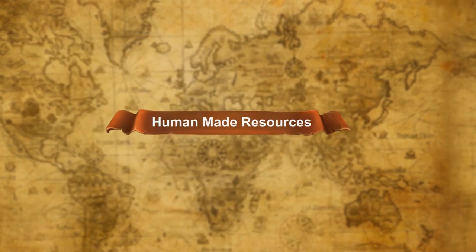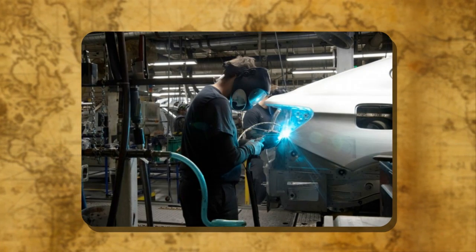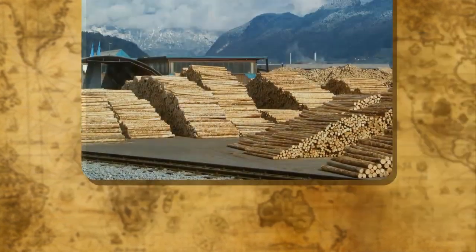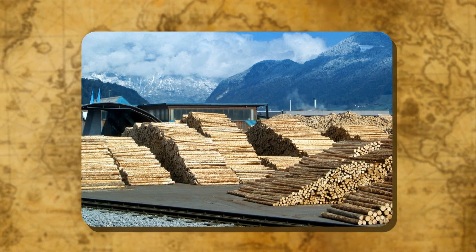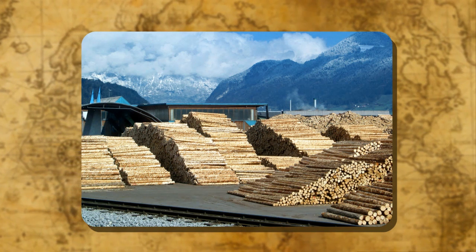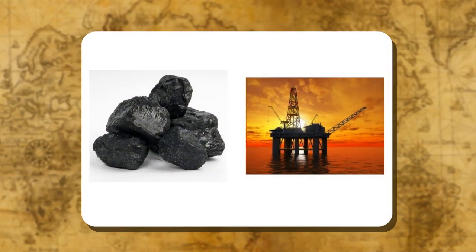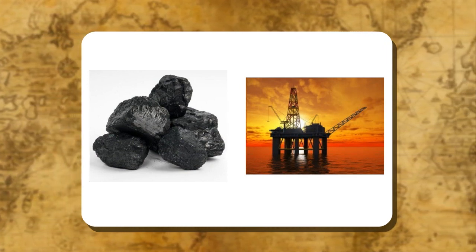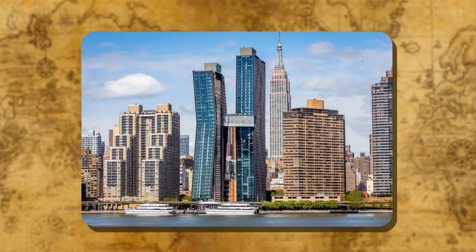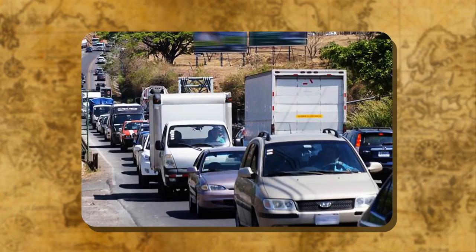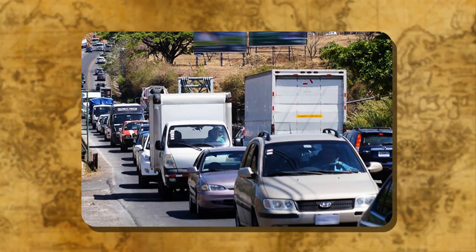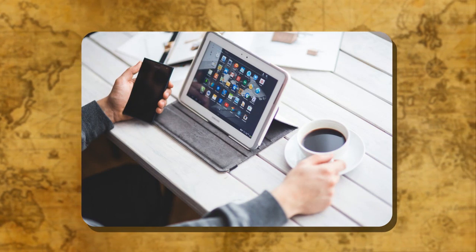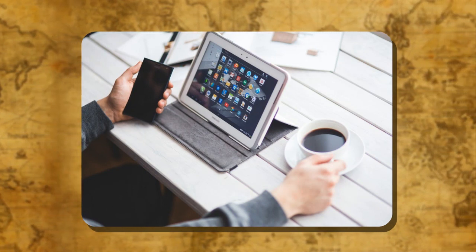Human-made resources are those resources which are developed by human beings by using natural resources. Human beings use technology to convert available natural resources into useful things. Coal and petroleum were not resources until people learned to extract and use them. People use natural resources to make buildings, roads, bridges, machinery, and vehicles, which are known as human-made resources. Technology is also a human-made resource because it is developed by human beings to make life easy.